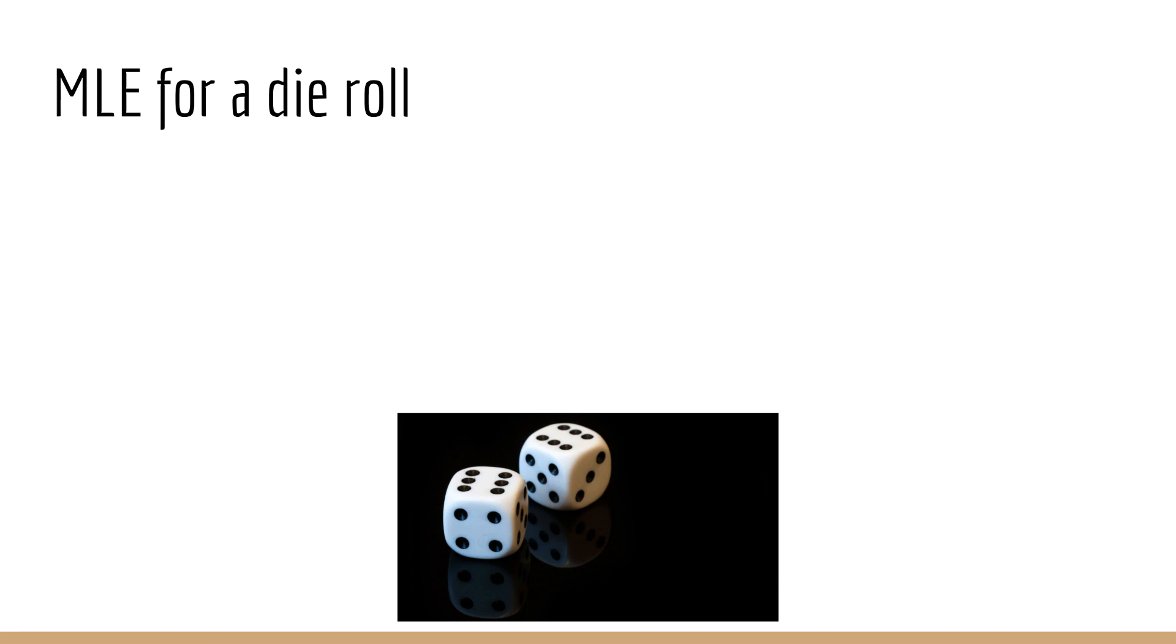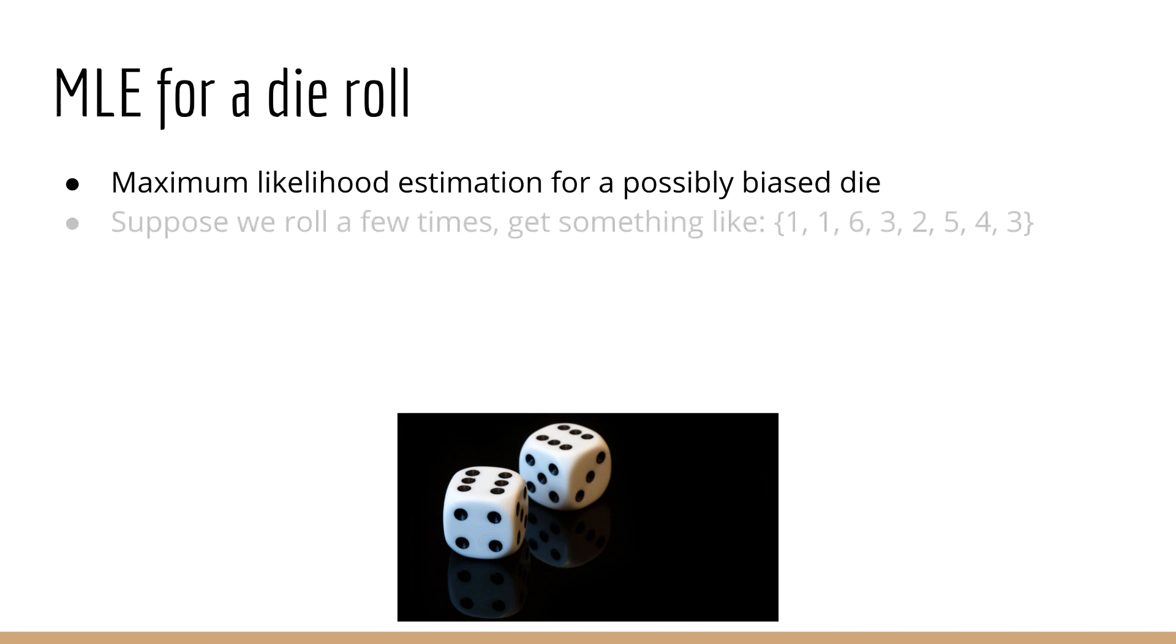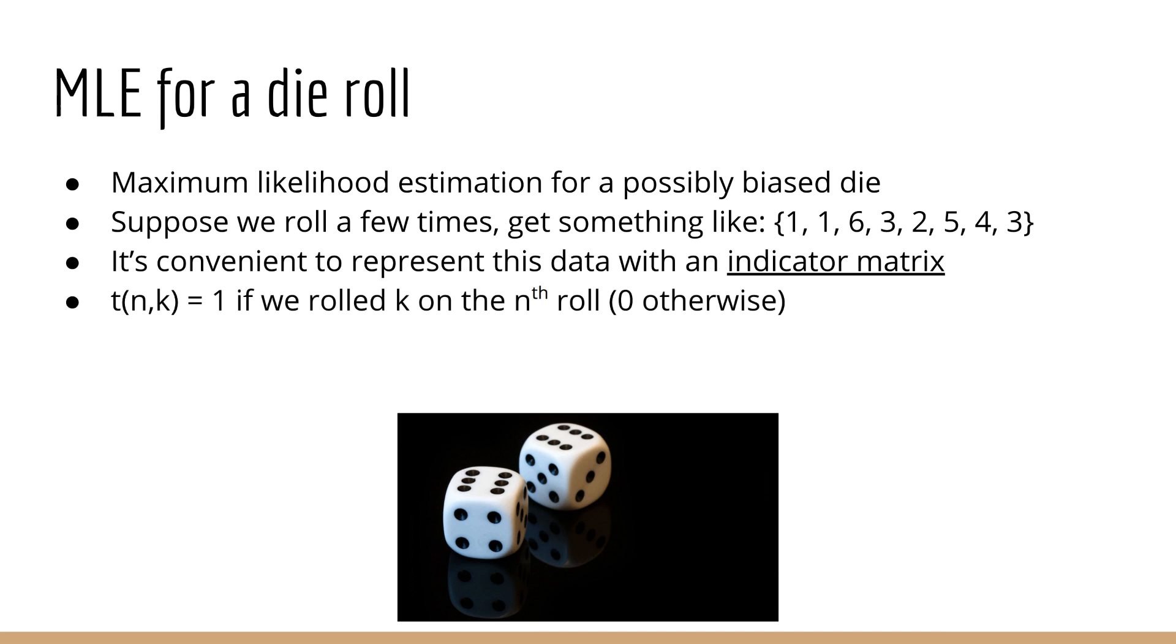If you want, you can do a simple example of solving the maximum likelihood problem for an actual, possibly biased die. In this scenario, you would have a series of die rolls, for example, 1 1 6 3 2 5 4 3. Importantly, it's convenient to represent these with an indicator matrix, which we'll call T of n k. T of n k would be set to 1 if we rolled k on the nth roll. Otherwise, it would be 0. You might also want to think of this as a one-hot encoded matrix. Since for each of the n rows, only one value can be a 1, and the rest must be 0.